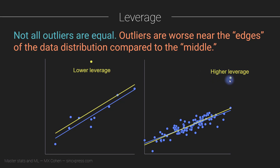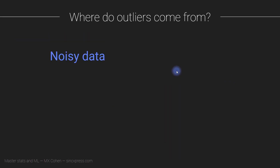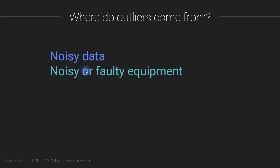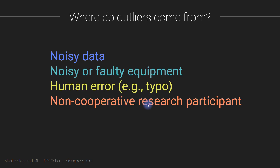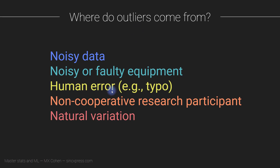Where do outliers come from? They can come from a variety of sources. Sometimes there's just noise in the data. Sometimes there's a problem with the equipment — an equipment malfunction that caused some unusual data. Sometimes there's human error, maybe someone entering data pressed the wrong key by accident. Sometimes if you're having participants volunteering in research, you just get some unusual people who do unusual things. But there's also just natural variation — things in the universe are naturally variable. People act very differently from each other, mountains all look very different, no two snowflakes are alike. It's important to think about where these outliers come from, because that affects the strategy for dealing with them.